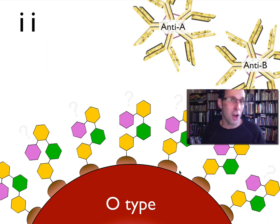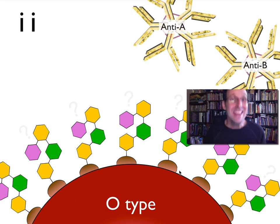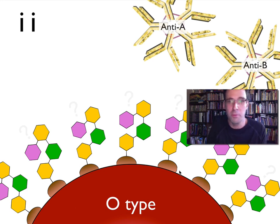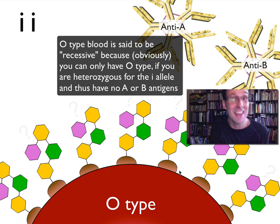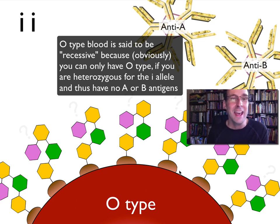Someone who has O-type blood, on the other hand, neither of their copies of that gene will produce a glycosyltransferase enzyme. And so all of their H-antigens will just stay H-antigens — none of them will be converted into A-antigens or B-antigens. And that's what we refer to as O-type blood.